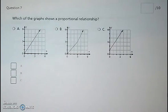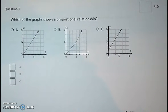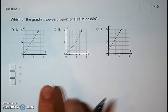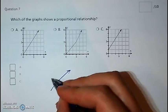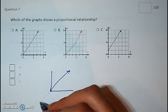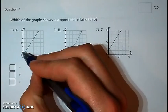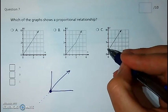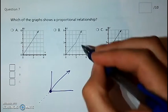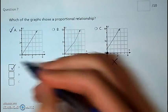Question 7: does this graph show a proportional relationship, or which of the graphs shows one? Any proportional relationship has to be two things: it's got to be a straight line, and it also has to run straight through the origin. The only one that does that is option A. One graph is not a straight line, and another does not go through the origin — so those are wrong, and A is the correct answer.